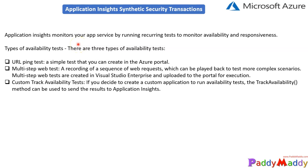Hello and welcome back. In this lesson we are going to learn about synthetic security transactions to monitor site availability and responsiveness. When it comes to Azure Application Insights, it sends web requests to your applications at a regular interval from points around the world, where you can specify the region locations and set a regular interval of communication — like a ping test — and it can alert you if the application isn't responding or is responding too slowly.